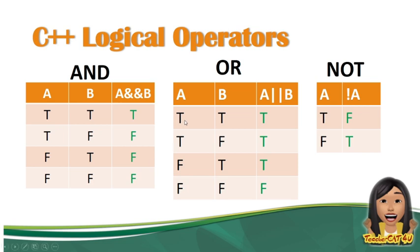Next is OR. True OR true gives a true expression. True OR false is still true, because with OR, once one expression is true, the whole expression is true. False OR true is also true, because one of the two expressions evaluated to true. False OR false is equivalent to false.